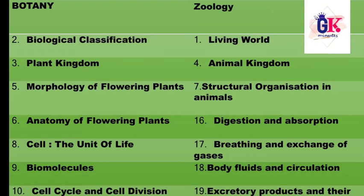The 6th chapter is anatomy of flowering plants. The 7th chapter is cell, the unit of life. The 8th chapter and 9th chapter is biomolecules. The 10th chapter is cell cycle and cell division. These chapters are in botany.